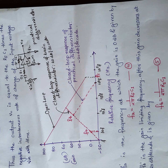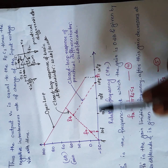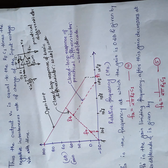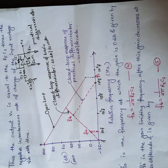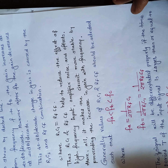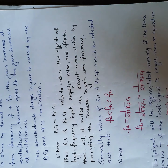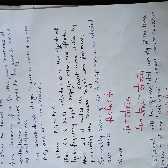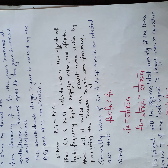fc is the unity gain bandwidth of the op-amp, and it is the largest frequency on the graph. The component values must be selected such that fa < fb < fc. fa = 1 / (2π · Rf · C1) and fb = 1 / (2π · R1 · C1). Since we have set R1·C1 = Rf·Cf, fb can equivalently be defined as 1 / (2π · Rf · Cf).